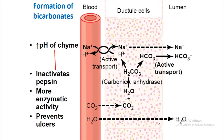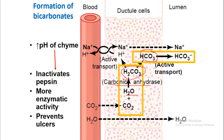Formation of bicarbonate in the ductal cells: CO2 plus H2O, under the presence of carbonic anhydrase enzyme, is converted to H2CO3, which breaks down into HCO3⁻ and H⁺. The HCO3⁻ goes into the lumen of the pancreatic duct. The H⁺ ion is exchanged with a sodium ion, which then enters the ductal cell and passes into the lumen of the duct, forming sodium bicarbonate (Na⁺ + HCO3⁻).